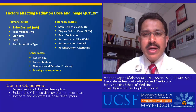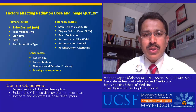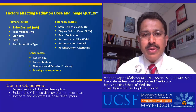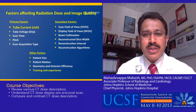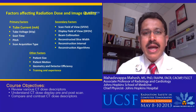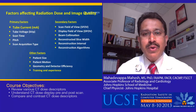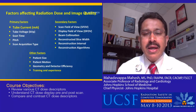Before going into the details of understanding the dose display, it is important to understand some of the factors that influence radiation dose and image quality. Among these, we can look at three different groups: primary, secondary, and other. Primary factors such as tube current, tube voltage, pitch, image acquisition, and scan time have a direct impact on radiation dose and image quality. Secondary factors such as reconstruction algorithms, display field of view, and scan field of view have an impact on image quality directly, and in some way also have an impact due to radiation dose effects.